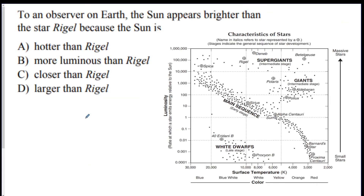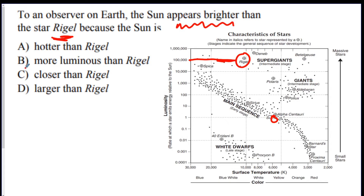Next question: to an observer on Earth, the sun appears brighter than the star Rigel because the sun is what? Rigel is clearly over 100,000 times brighter than the sun in actual luminosity. But our sun appears brighter to us because the sun is much closer to us than Rigel. Rigel is very far away, so even though it's intrinsically brighter, it's too far away to appear as bright.